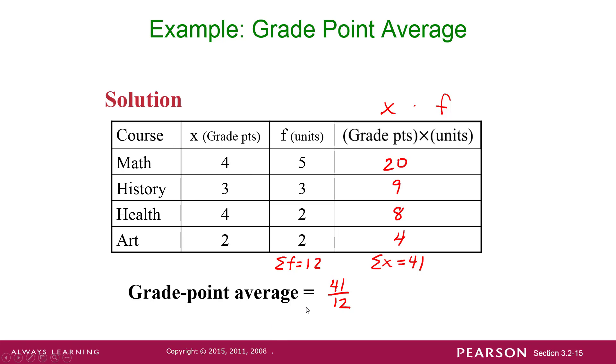And then we get a grade point average of 41 twelfths, which turns out to be 3.42. So you remember doing that, right?